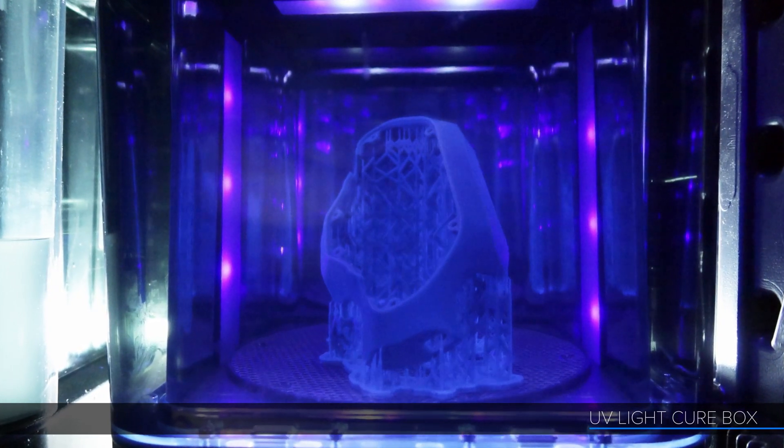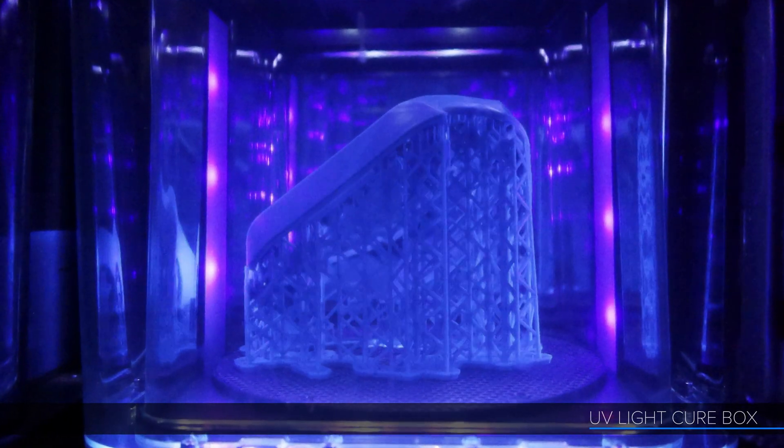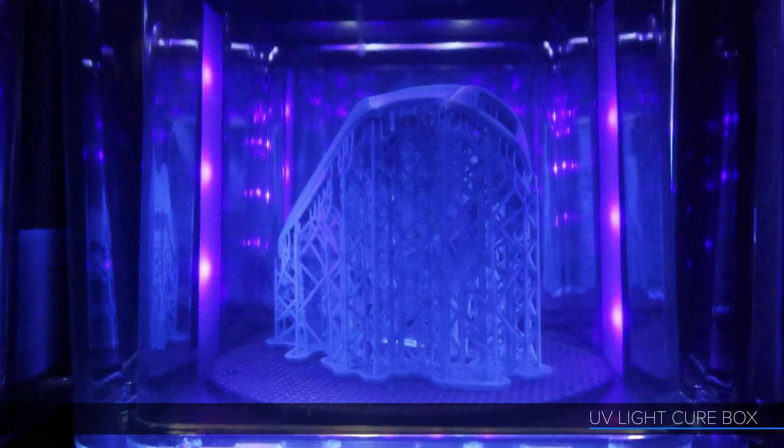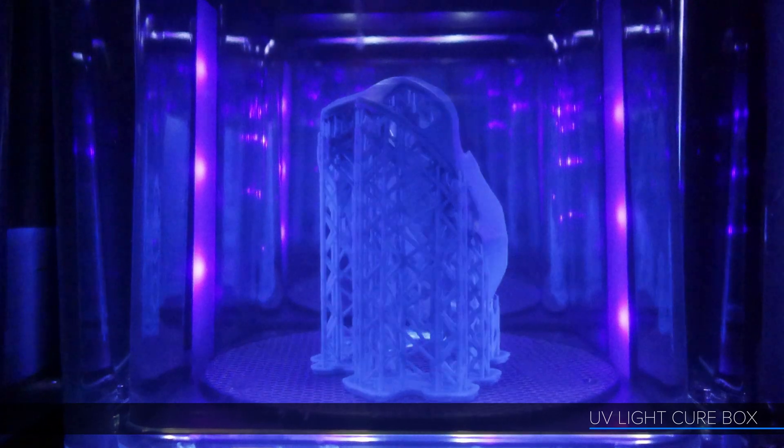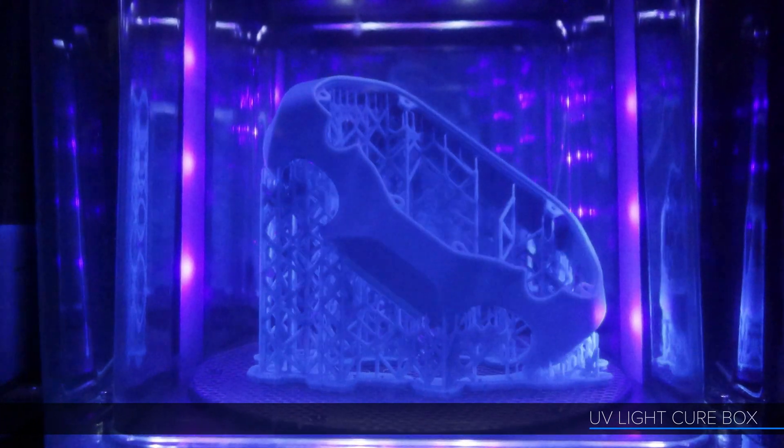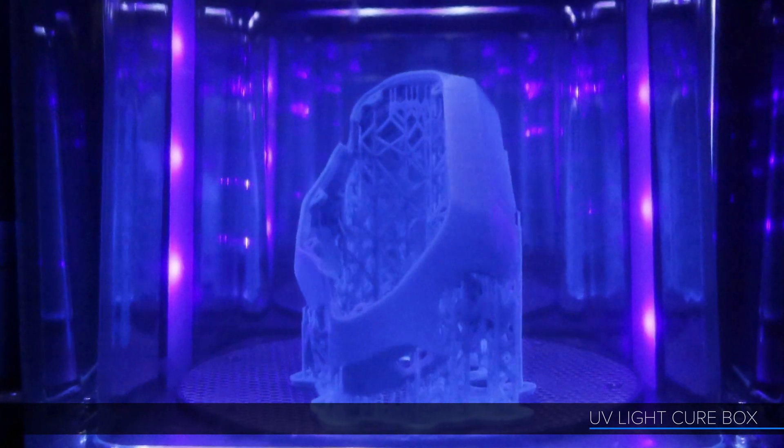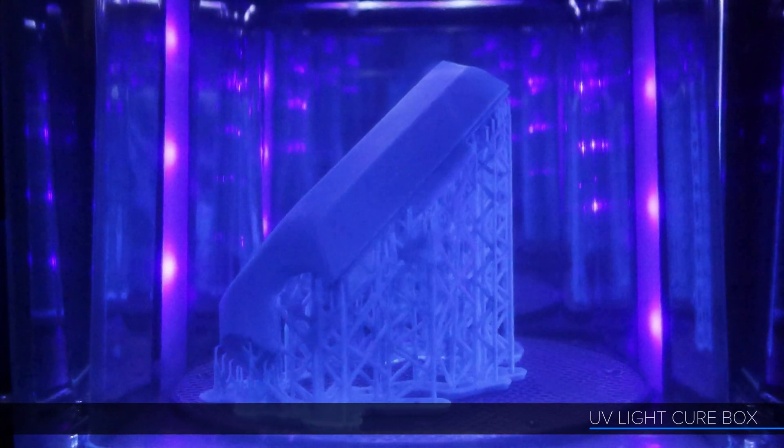Each of the parts gets removed from the build platform and washed in an isopropyl alcohol bath. They are then put in a heated UV light box for final curing, which you can see here. This step sets the final mechanical properties of the finished parts. After about an hour in the light box, the supports get broken or trimmed off and the part is ready to be finish sanded and painted.